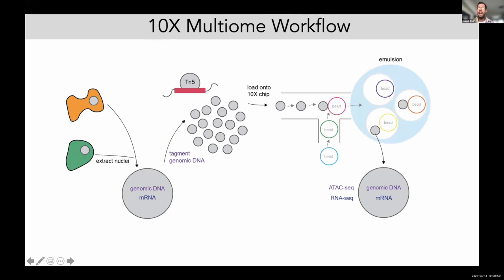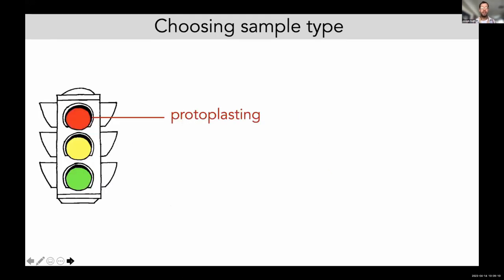I want to point out — and this will be relevant later — that not all droplets are used, so there will be some GEMs that are not filled by nuclei. Regarding how we apply this technique to plants: this is not a protoplasting technique. The kit does not work with protoplasts; it is only amenable to nuclei, so protoplasts are off the table.